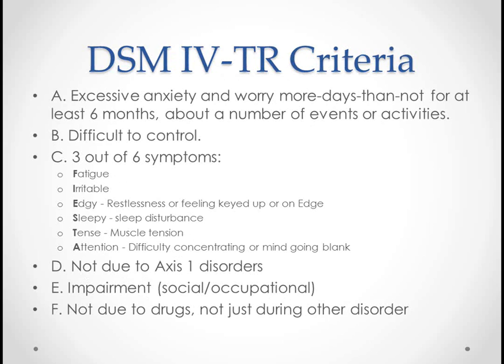The criteria: Criterion A is excessive anxiety and worry more often than not for at least six months, and it has to be about multiple events instead of just one thing, because that would be more like a social phobia or a specific phobia. So generalized anxiety disorder has to be about a bunch of things — otherwise it's probably more of a specific phobia.